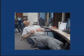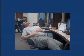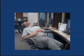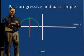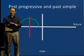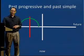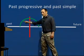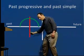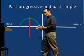Let's look at one more video. With that video, we have two actions: first we have reading, and then fall asleep. So which action was in progress? We would probably say 'was reading.' And then the red line shows 'fell asleep.'